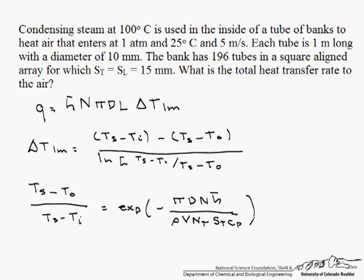Since there are 196 tubes and it's a square array, our number of tubes in the transverse direction is 14. So we have everything here — we can look up the properties — except for our h-bar, our heat transfer coefficient. And we're going to need it when we solve for Q, so let's go ahead and find it.